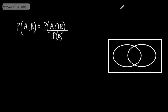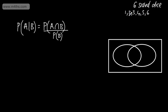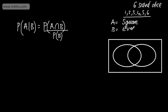Let's look at this in context. Taking a six-sided fair dice, we know the outcomes are equally likely. Listing the outcomes, we can have a 1, 2, 3, 4, 5, or 6. I'm going to define event A to be rolling a square number, and event B will be rolling an even number. So let's go ahead and fill out the Venn diagram.